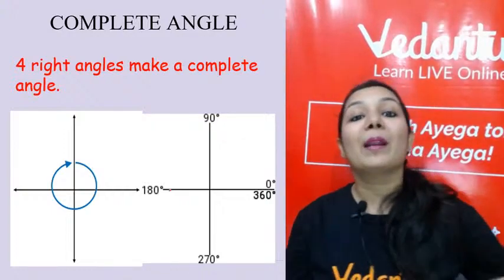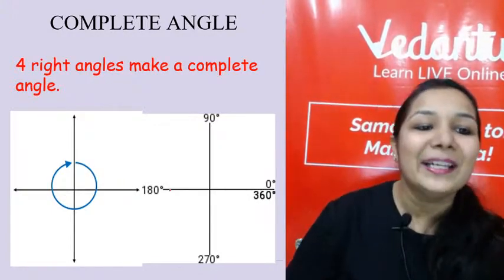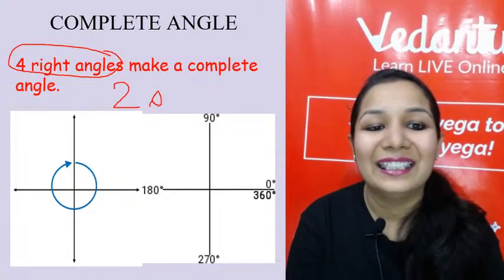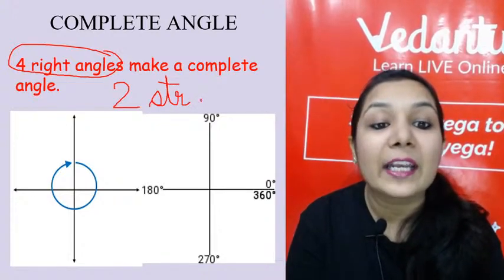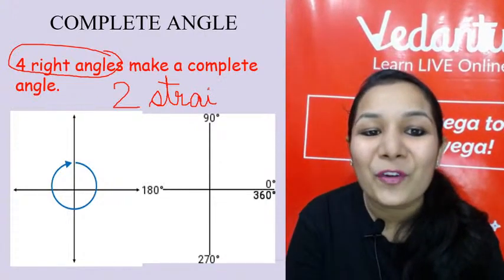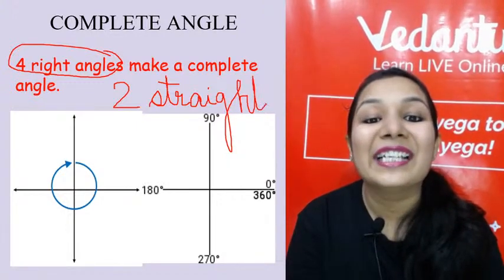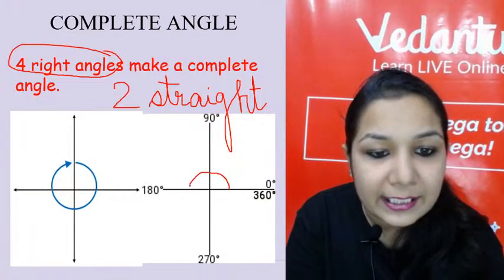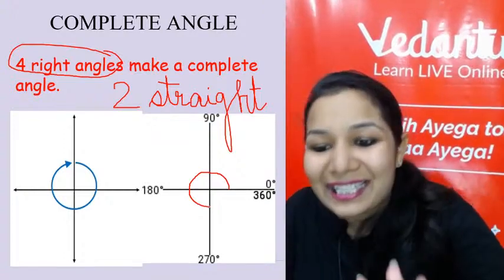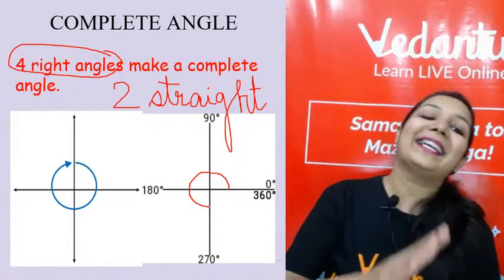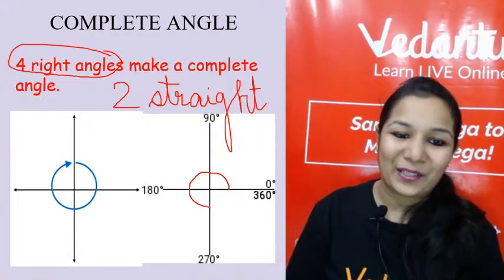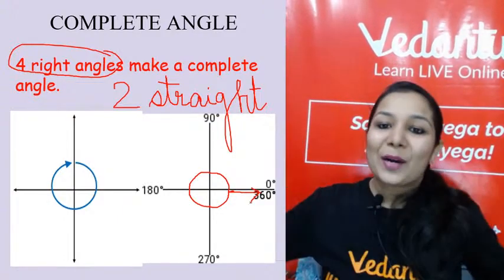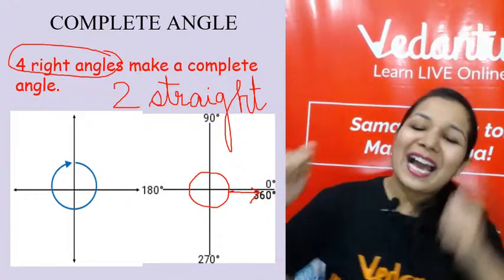Next is the complete angle. Four right angles, or two straight angles, can make a complete angle. A complete angle is where I take one full rotation of a circle — that makes it 360 degrees.